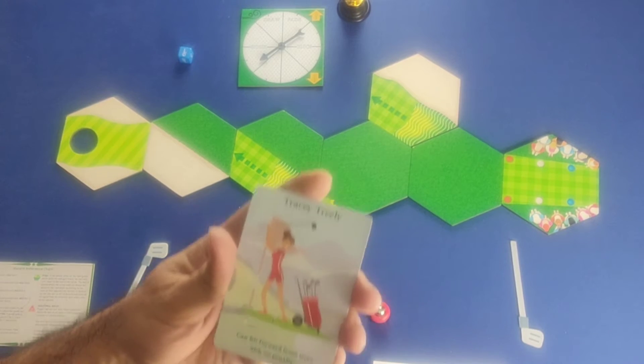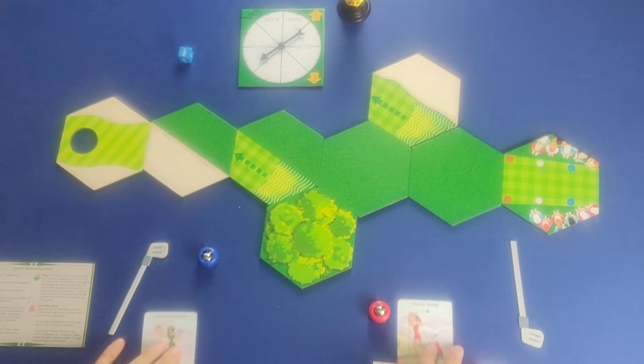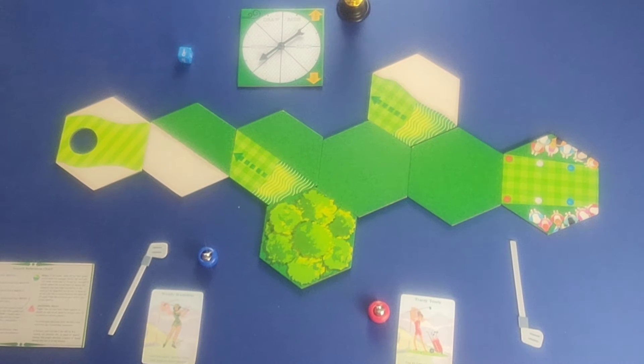Here we have Tracy Treely, who can hit forward from trees with no penalty. So there is that. So basically, these are special abilities that allow players to bend, tweak the rules, even break the rules in their favor and give them advantages from other players around the table that are unique to them.